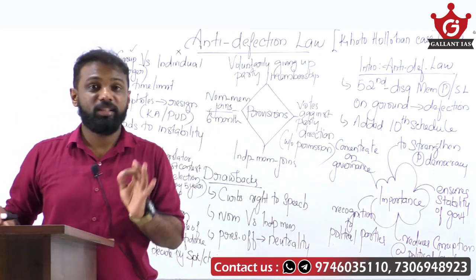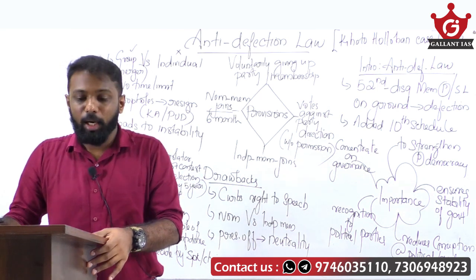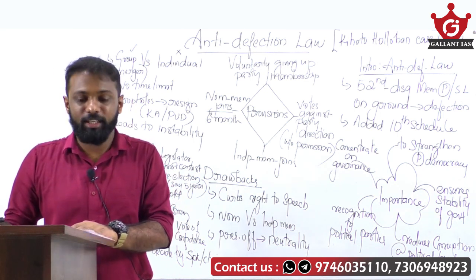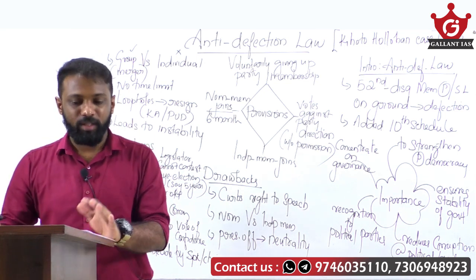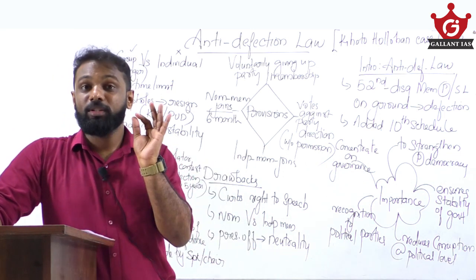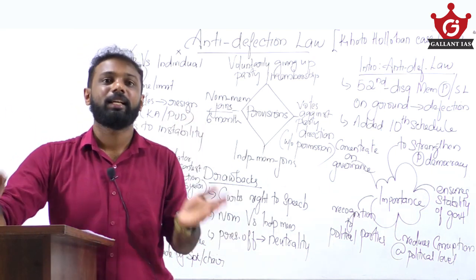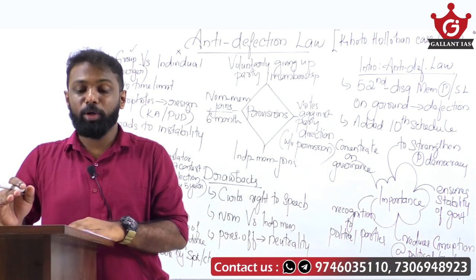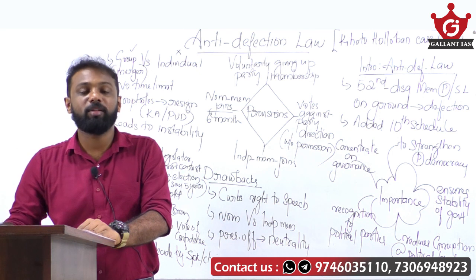The question is: '10th Schedule, which aimed at ensuring the stability of the executive, is fruitless. Point out the drawbacks of anti-defection law and suggest measures to prevent horse trading in our parliamentary democracy.' The question states that the aim of the 10th Schedule was to ensure the stability of the government, but it is found to be fruitless in many cases.